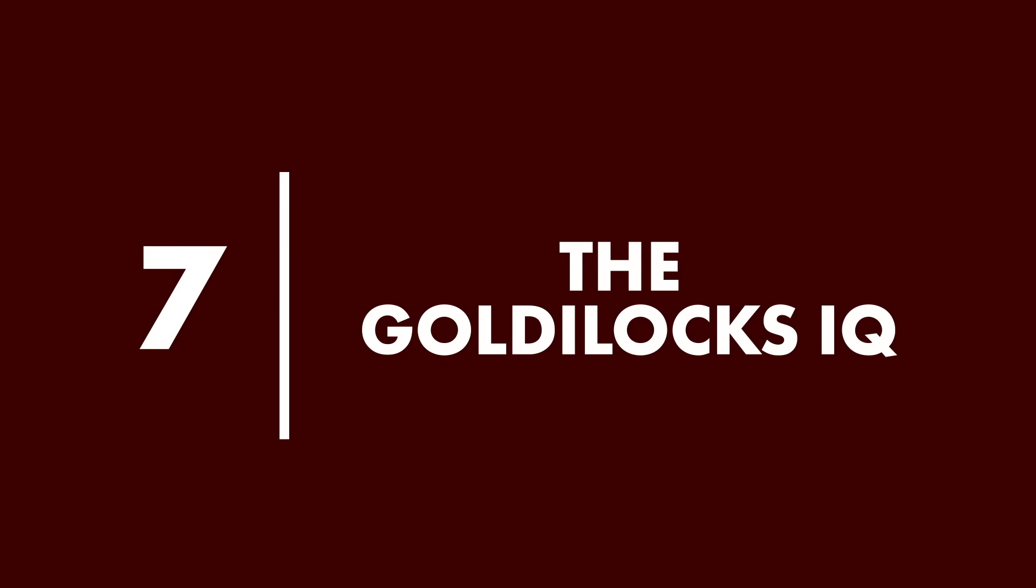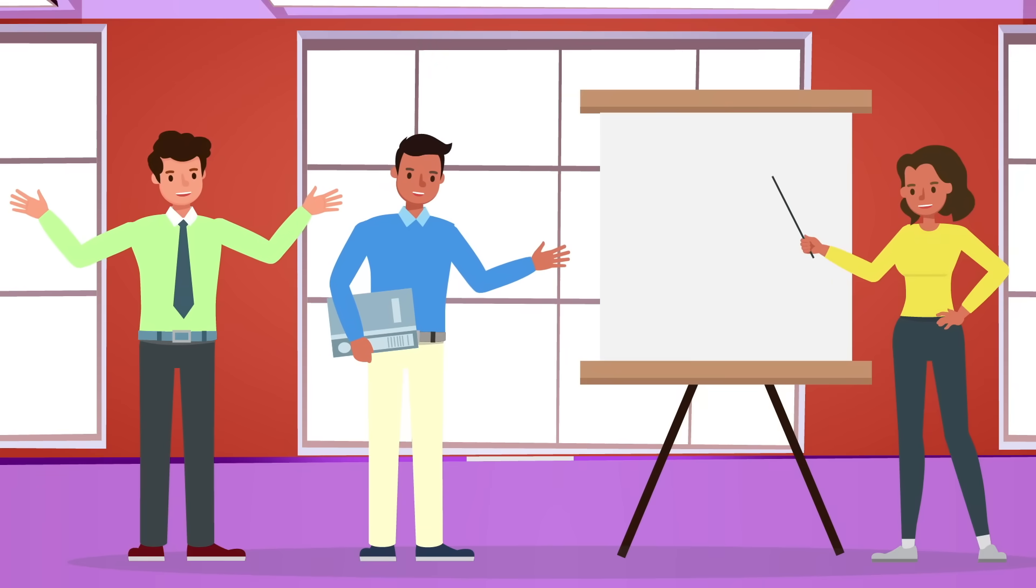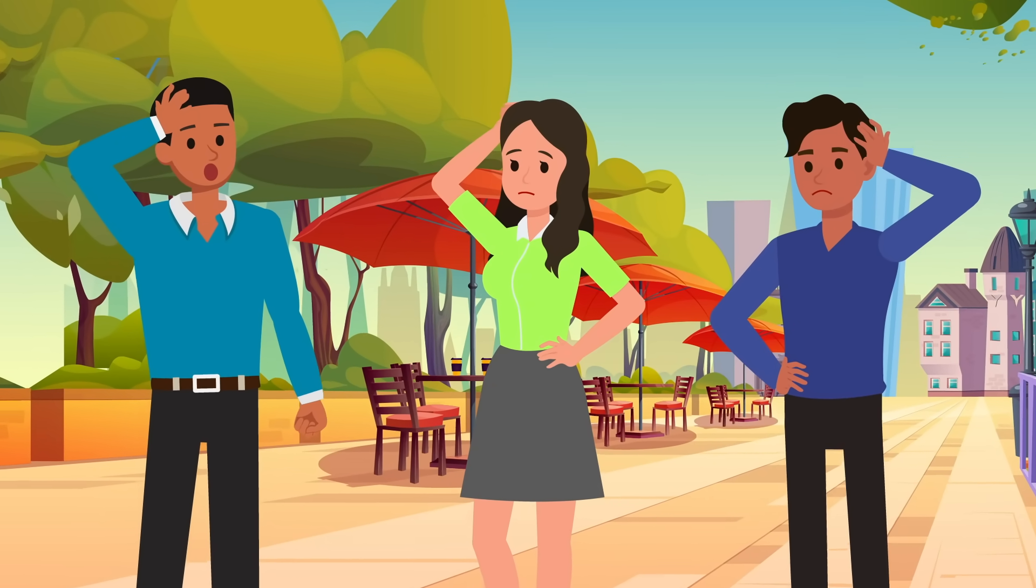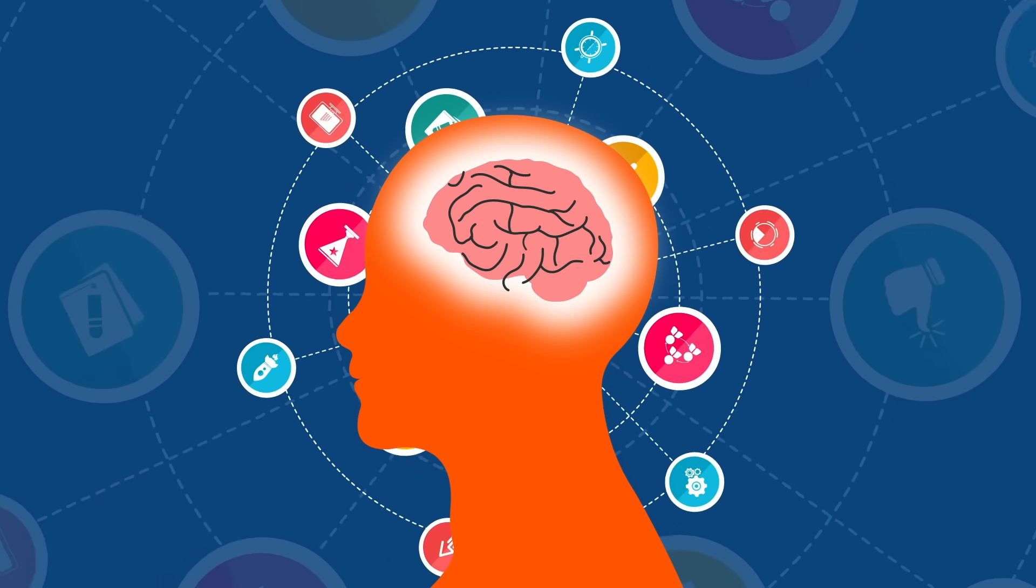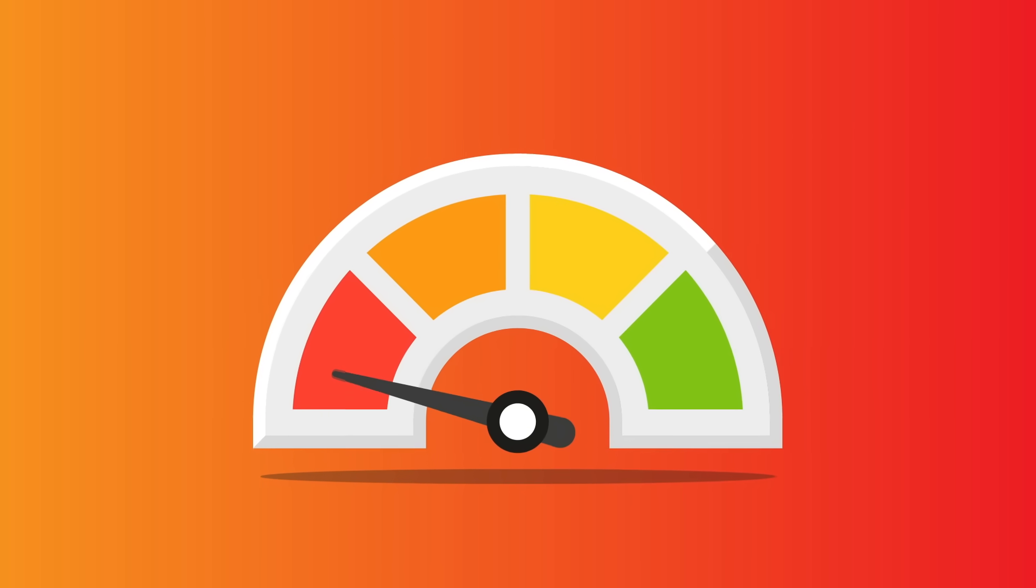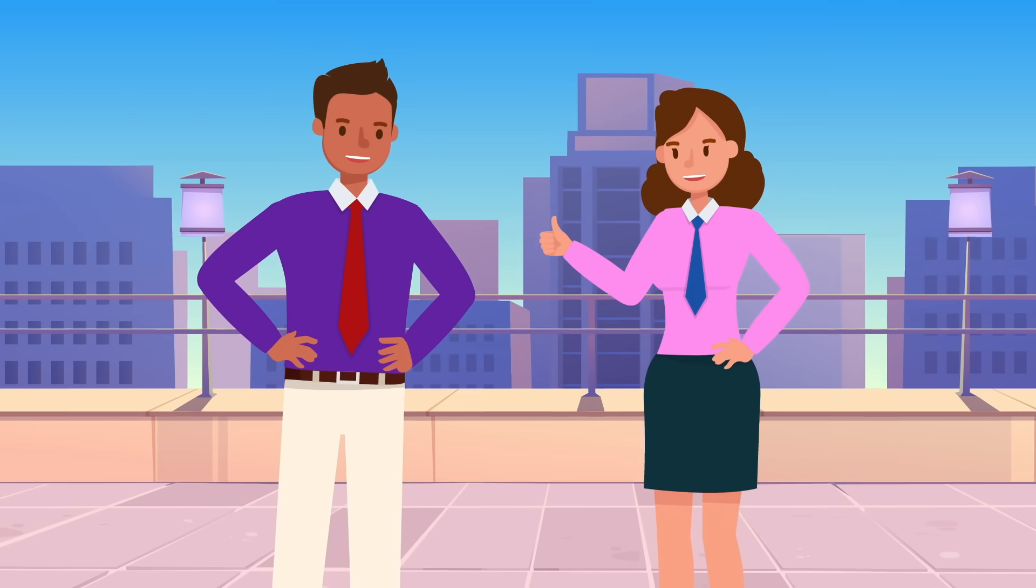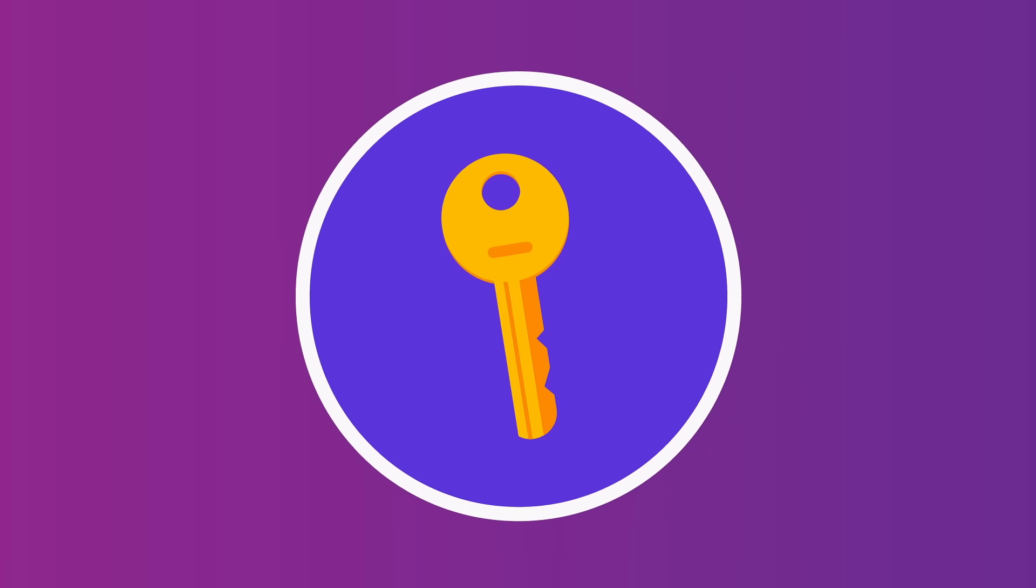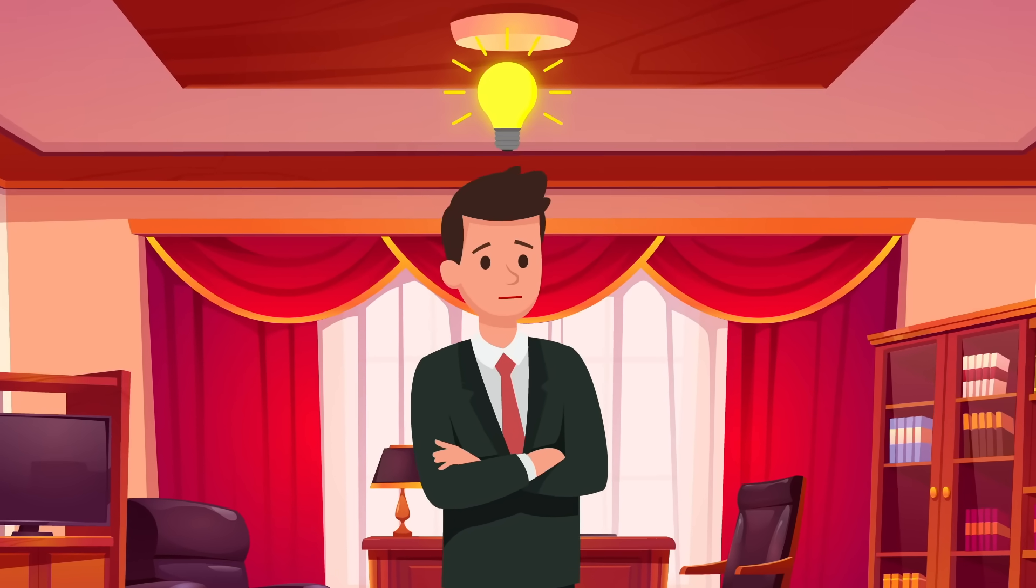7. The Goldilocks IQ. Being intelligent is consistently rated as one of the most attractive traits. After all, someone who can hold thoughtful conversations and offer new insights is appealing. However, there's a balance, and being excessively intelligent can be off-putting. Someone who uses overly complex language or constantly shows off their intellect can come across as arrogant or unable to connect on an emotional level. The most attractive level of intelligence lies somewhere in the middle. Smart enough to stimulate the other person, but self-aware enough to recognize when simpler communication is needed. The key is having intelligence alongside empathy, self-reflection, and approachability. Being the smartest person in the room doesn't necessarily make you the most desirable.